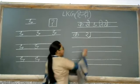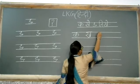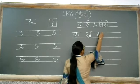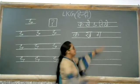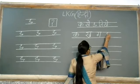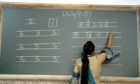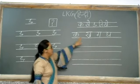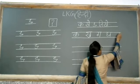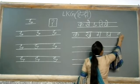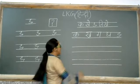अंदर साइड में आगे कर्व स्टार्ट करेंगे, लेकिन स्टैंडिंग लाइन से टच नहीं करना है, पहले ही स्टॉप कर देना है। और हेड पे लगेगी कैप। क, ख, ग, घ, ङ — इसी के साथ हमारे व्यंजन की पहली लाइन कंप्लीट होती है। अब आप इसकी बार-बार प्रैक्टिस करोगे।